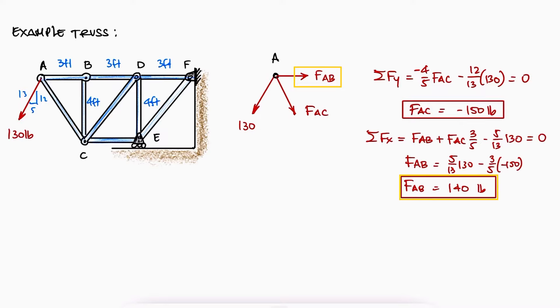The value for FAB is in fact positive, which means that member AB is in tension. The value for FAC is negative, which means that the vector should be pointing in the opposite direction and therefore member AC is in compression.